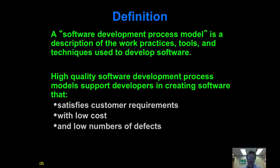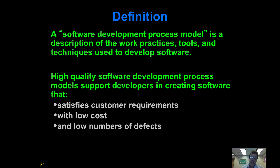A software process model is nothing more than a description of how you work, what tools you're using, and what techniques you're applying in order to develop software. If we do this correctly, then given the team and the customer requirements, you should be able to satisfy their needs with a relatively low cost and relatively good quality.